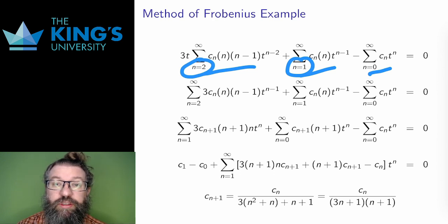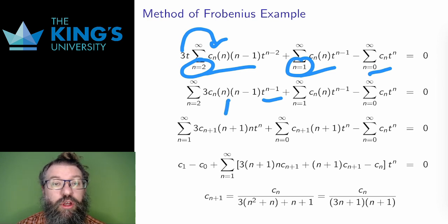When r equals 0, I have something that looks very much like a solution at an ordinary point. The steps are the same. I take the 3t into the first series. Then I shift to make all the powers of t into tⁿ, which means shifting the first two series by 1.